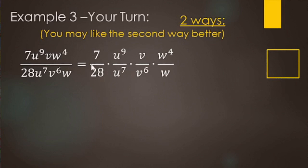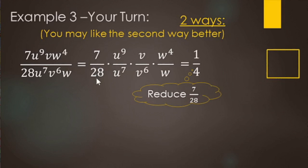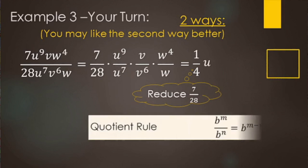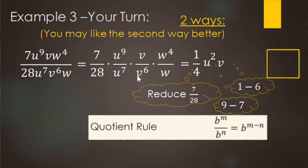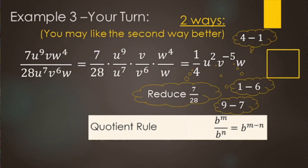7 over 28 is a regular fraction: 7 divided by 7 is 1 and 28 divided by 7 makes 4. For the U's, using the quotient rule: 9 minus 7 makes U squared. For the V's, we have one factor of V (hidden exponent of 1) over V to the sixth: 1 minus 6 gives negative 5. Think of it like money — you have a dollar but owe $6, so it's negative and you owe $5. For the W's, 4 minus 1 makes W to the third.